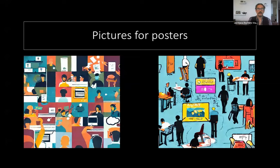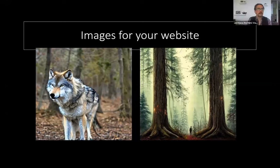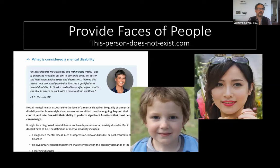Pictures for posters are generated by giving a text prompt. You would say, draw me a picture of people engaged in everyday digital activities, and you might get something like this back. Another one I was really interested in was imagining scenarios. Here's one of Vancouver flooding — sometimes creating an emotional aspect can really impact people's desire for action. Images for your website: you can see an AI generated image of a wolf, some large cedar trees, some old growth forests. These were very straightforward prompts — show me a solo wolf in a forest, or draw me a dreamy picture of a cedar tree with a small person. You can also use faces of people.